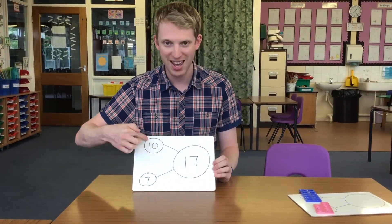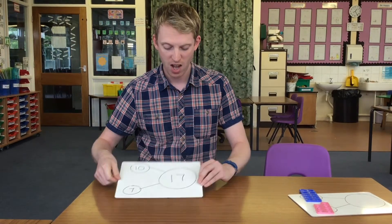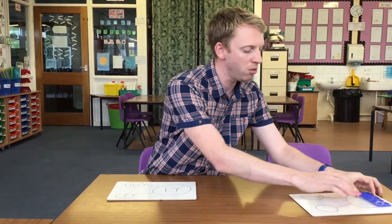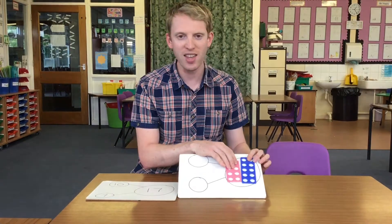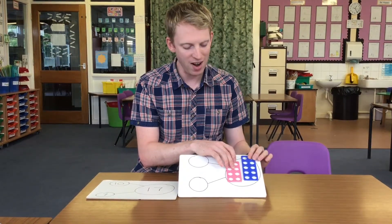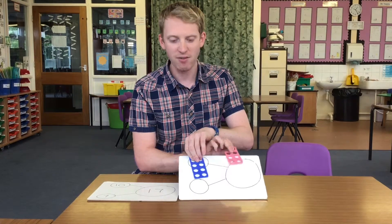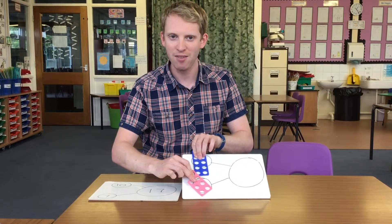17 subtract the 10 leaves the 7. And we get the children to try that as well with the concrete apparatus. They've got their 17, they subtract the 10, and they find out what part is left: the 7.